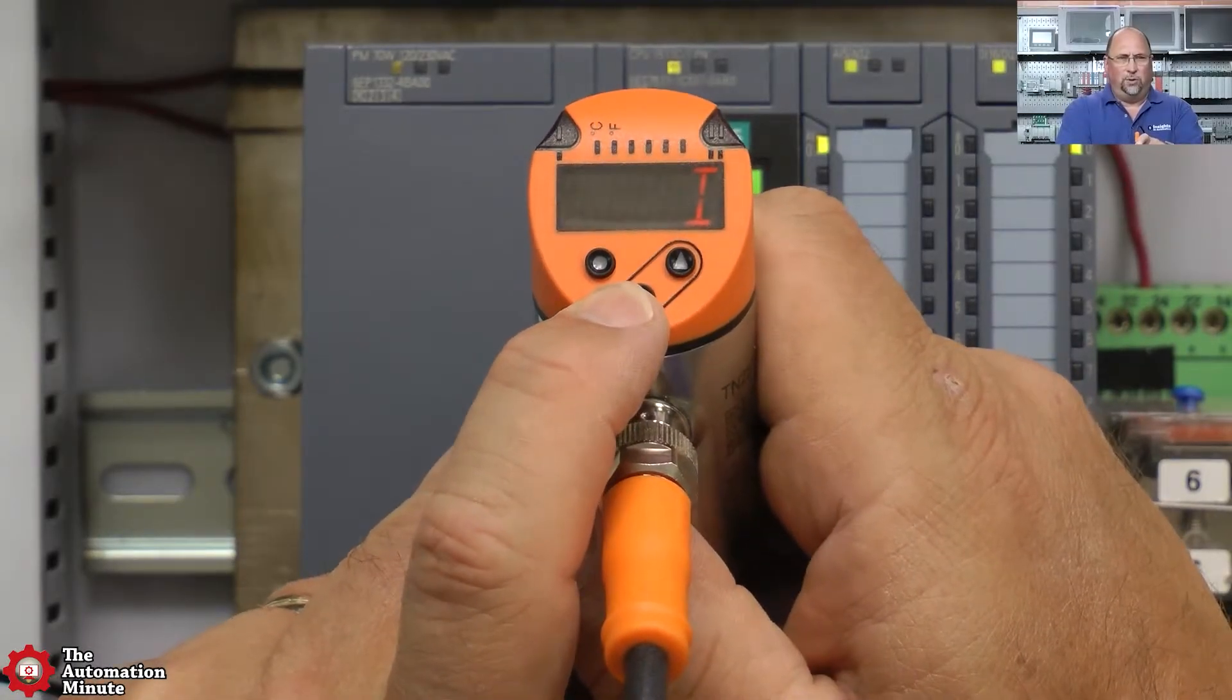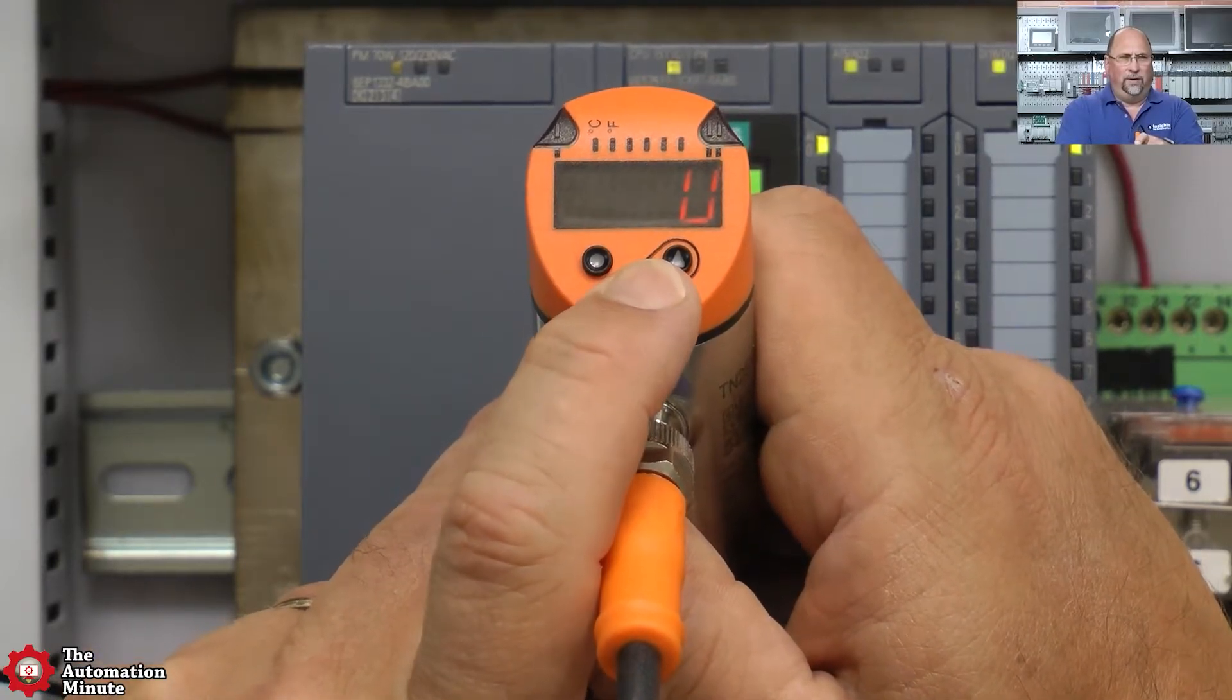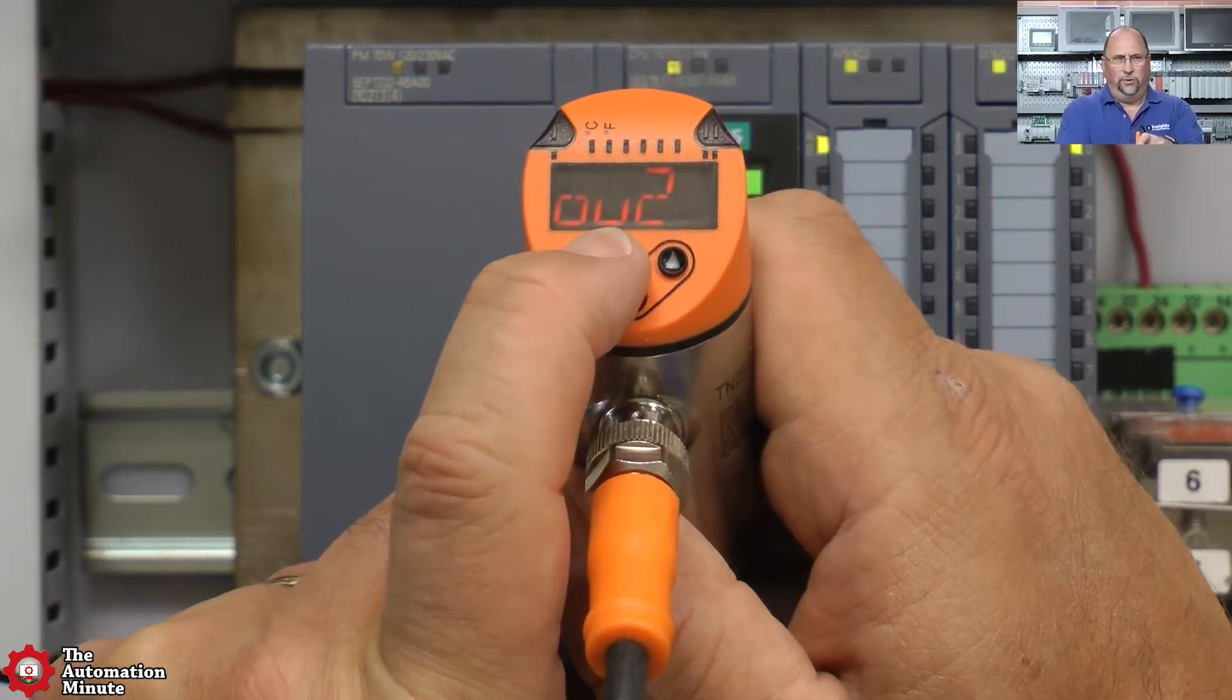The analog output's range can be configured based on your application and can be set for either 4 to 20 milliamp or 0 to 10 volts out.